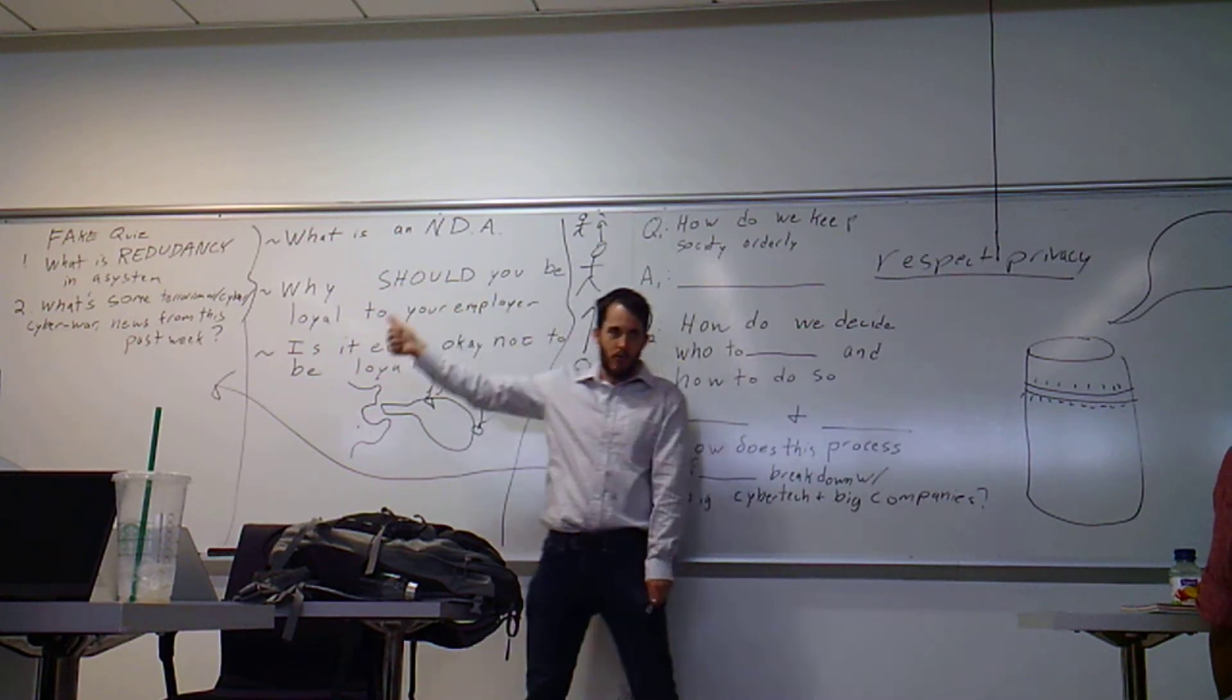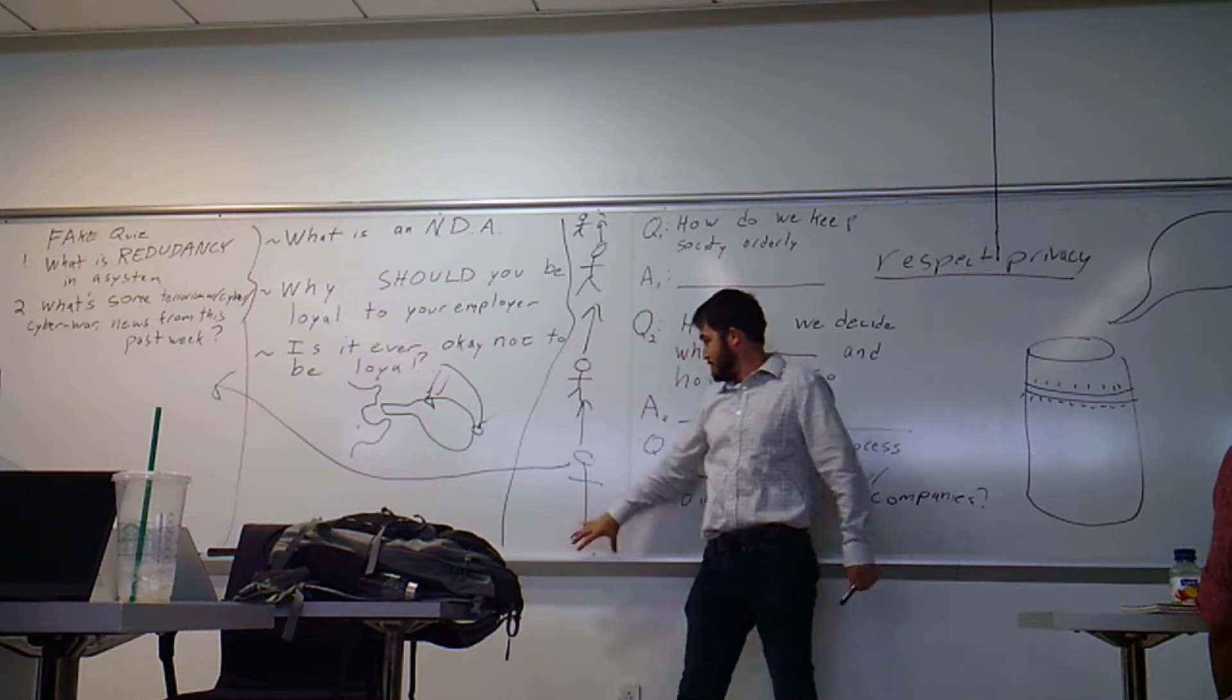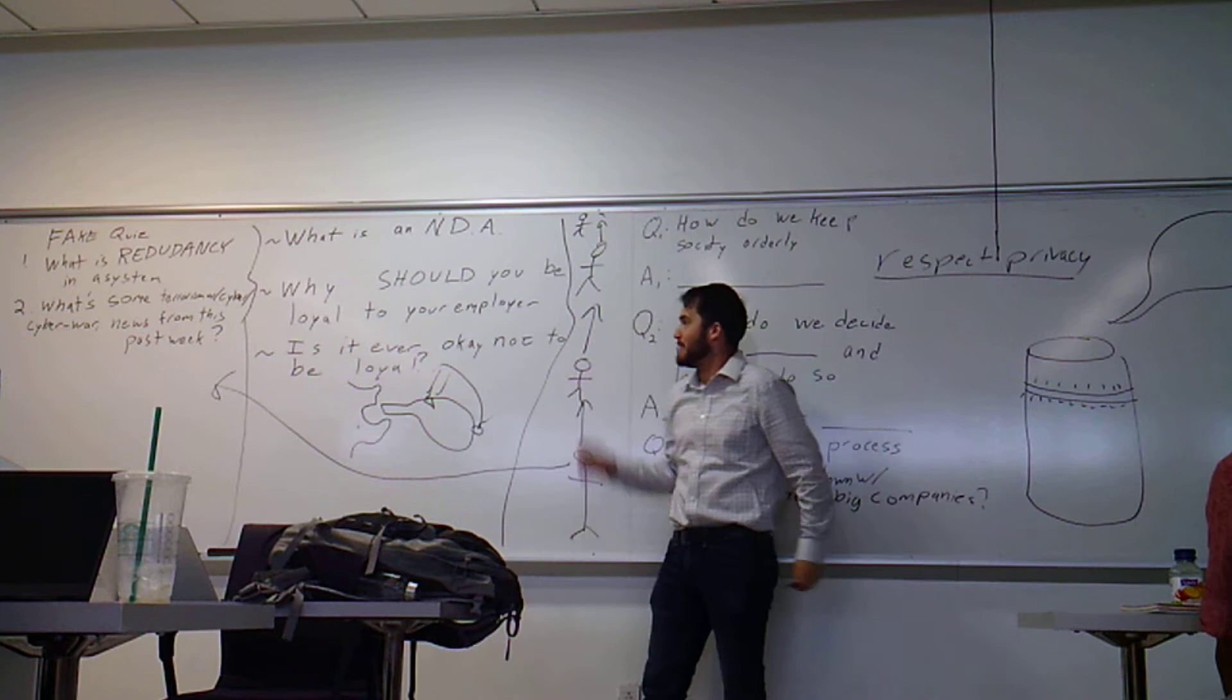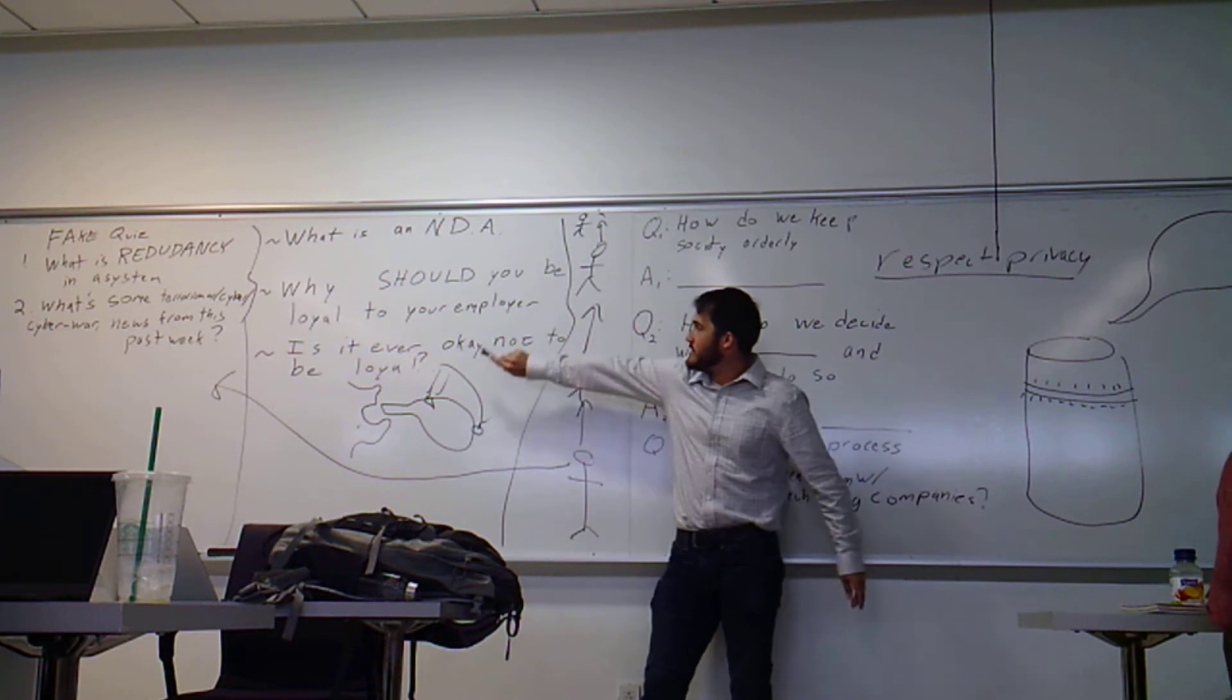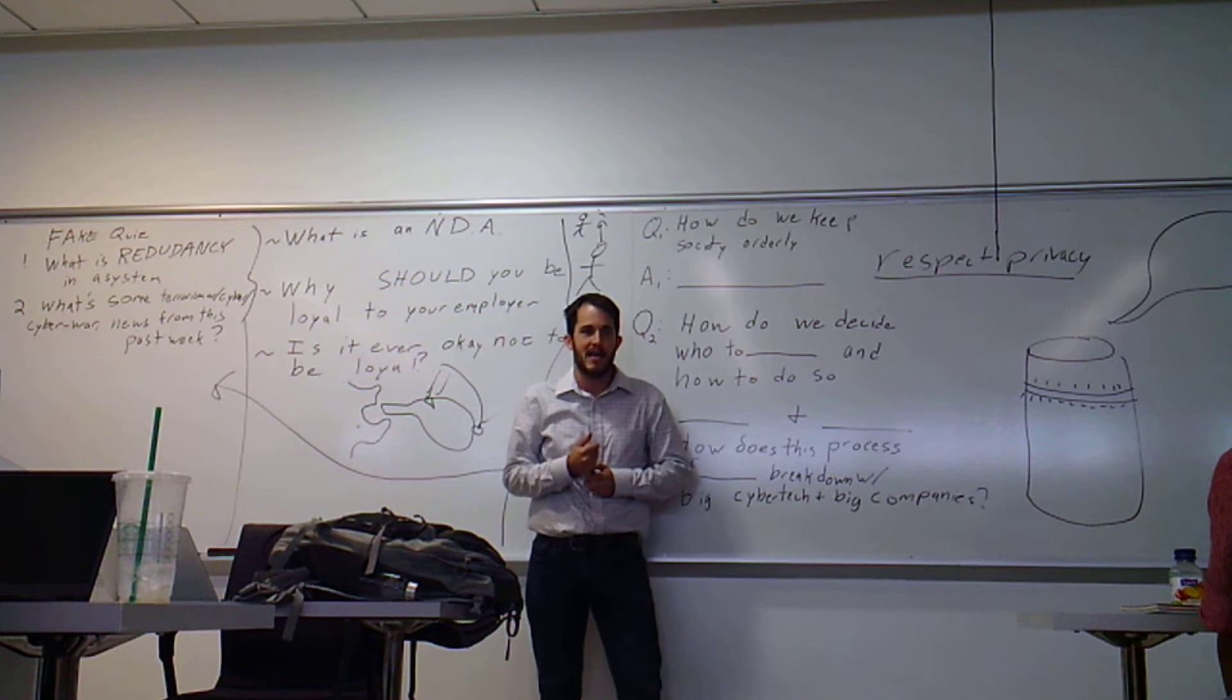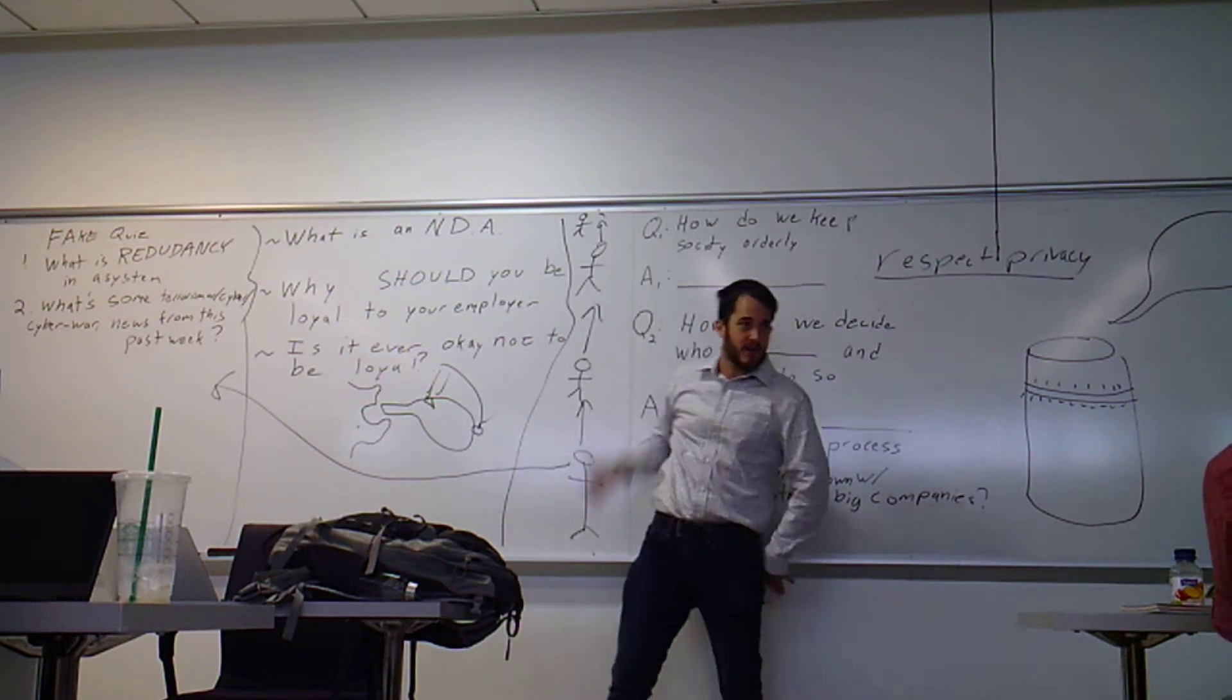So yeah, that's the thing, and this is why whistleblowing is a thing. One, you can get in trouble for it. Two, there are generally plans of action in place that are supposed to work, so you don't have to blow the whistle. But here's the big one. When is it okay not to be loyal? When is it okay to go outside the company? Go outside this sort of chain of command?